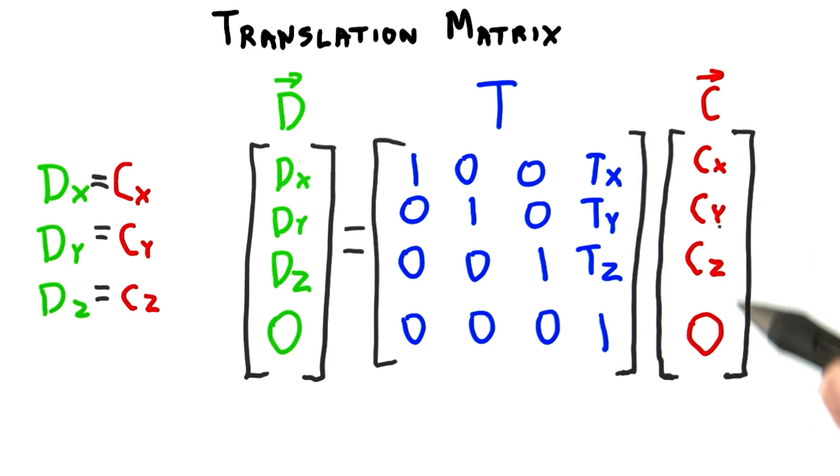Say instead you multiply a vector by this matrix, you'll get the same vector back. The fourth coordinate of the vector is 0, so for all the translation values, they're multiplied by 0 and so ignored. This makes sense. A vector does not have a location and so cannot be translated.